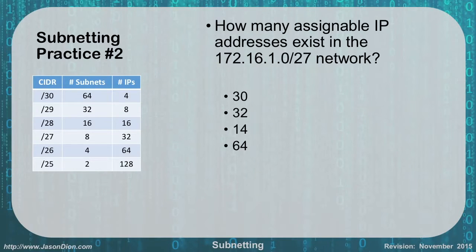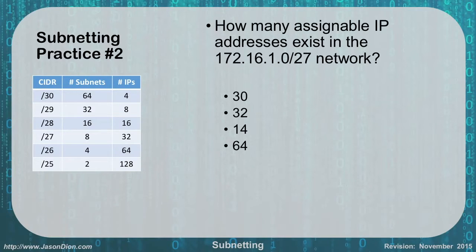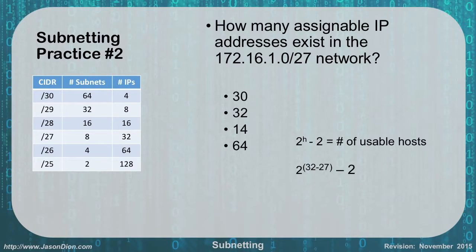For the next problem we want to figure out how many assignable IP addresses exist in a 172.16.1.0/27 network. The key word here is assignable. From the chart, a slash 27 gives us 32 IPs. But that's not the right answer because we have to account for the network address and the broadcast, so we subtract two. Slash 27 is 32 minus two, which gives us our answer of 30 assignable IP addresses.